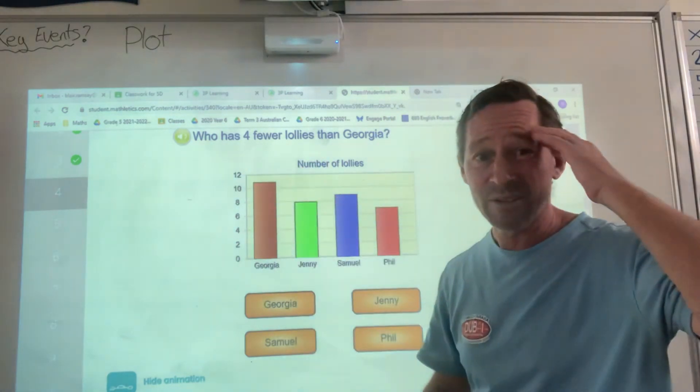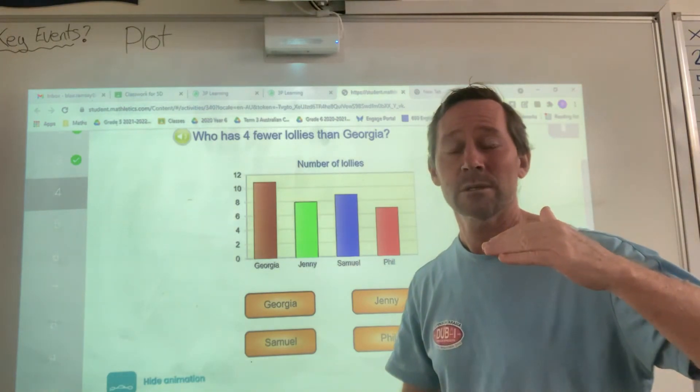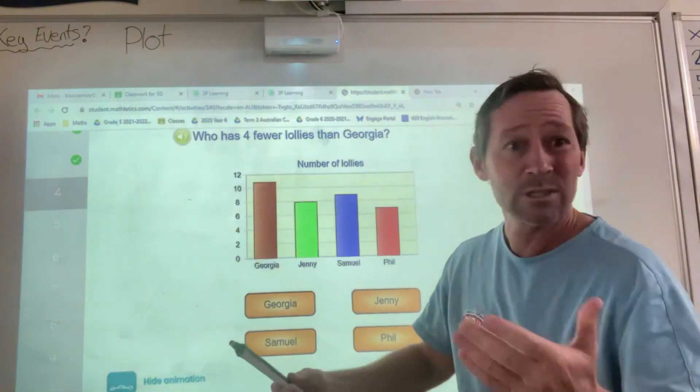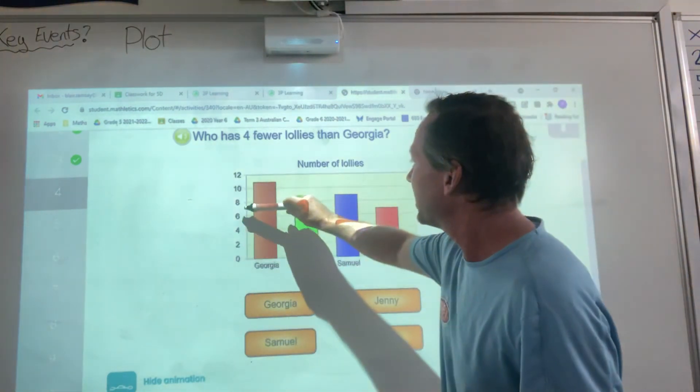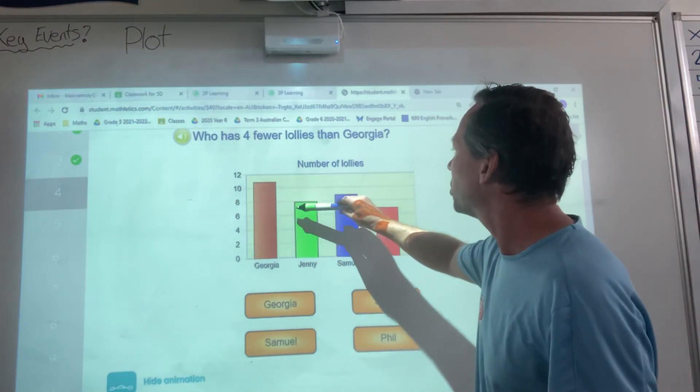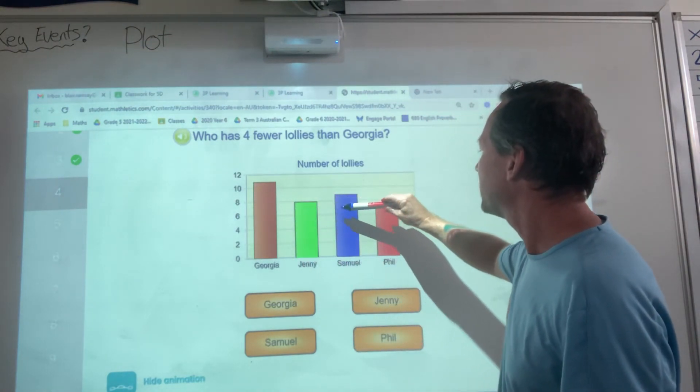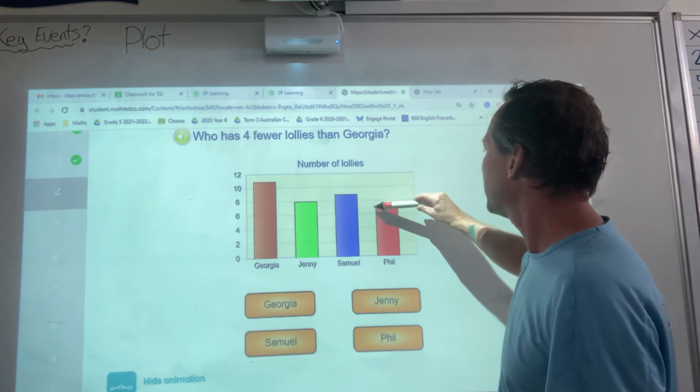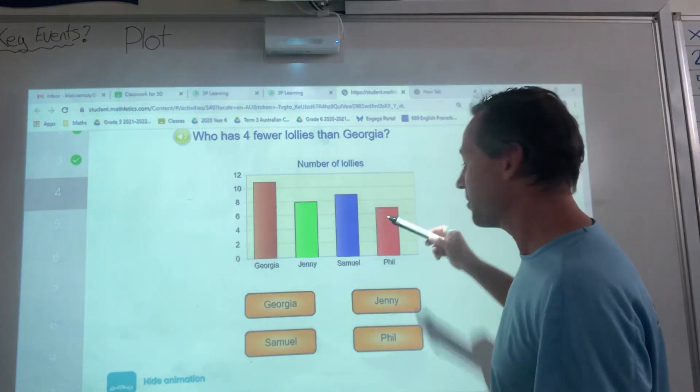So, then, I think 11 minus 4 would give me 7. So, I'm looking for someone who has 7. So, here's 7. I might go across here. No. Jenny has 8. Samuel has 9. Phil has 7. So, it must be Phil.